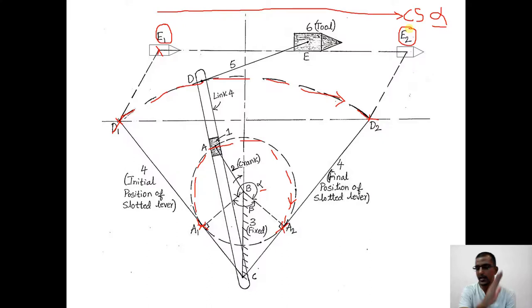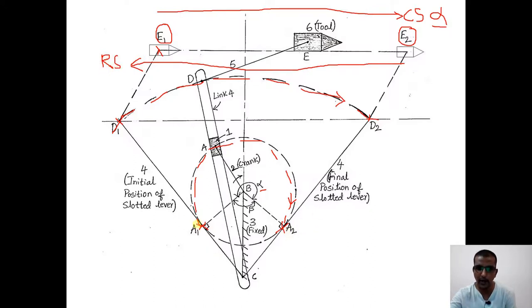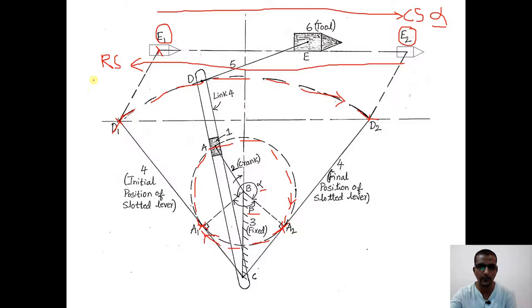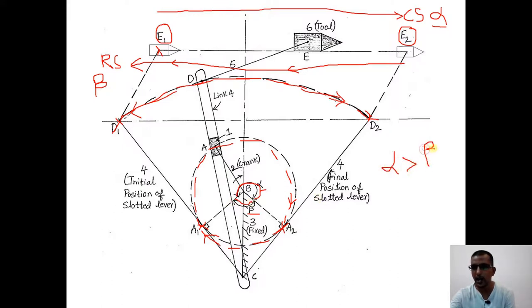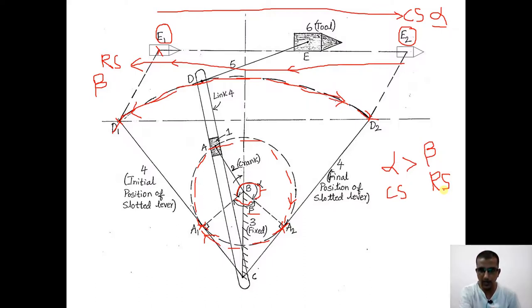The tool now has to move back from E2 to E1, which is the return stroke. A2 moves back to A1, D2 moves back to D1, and E2 moves back to E1, moving from right to left. As A2 returns to A1, it travels through an angle beta — the angle of the return stroke. Observing angles alpha and beta, alpha is greater than beta. Since the angle of the cutting stroke is greater than the angle of the return stroke, the return stroke will be much quicker than the forward stroke.